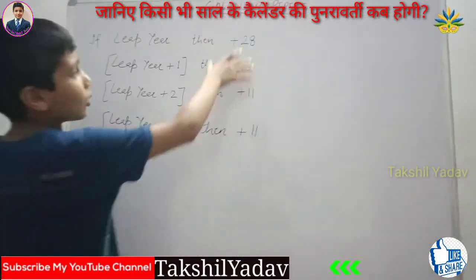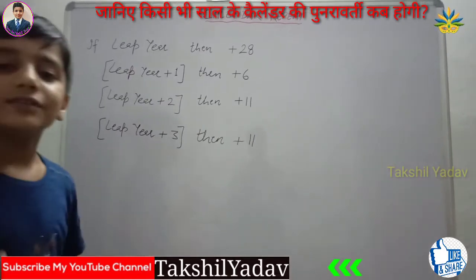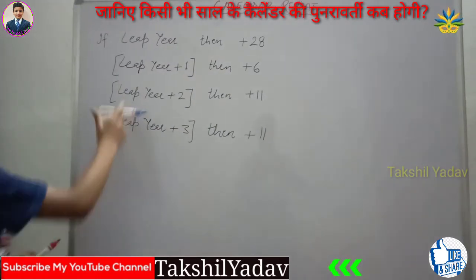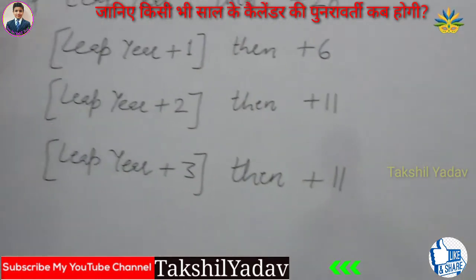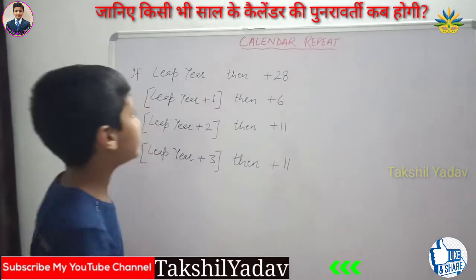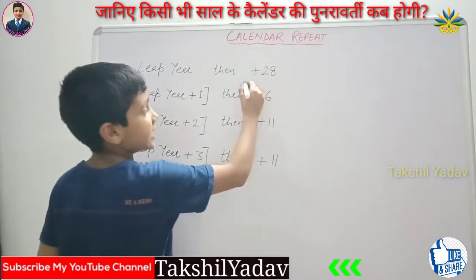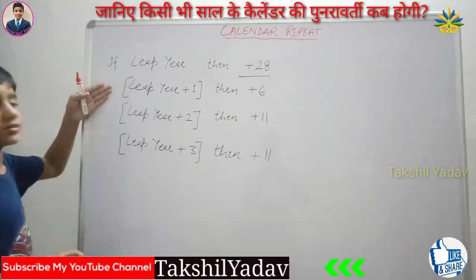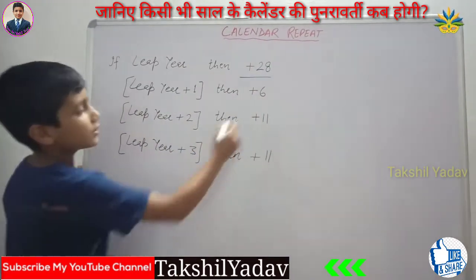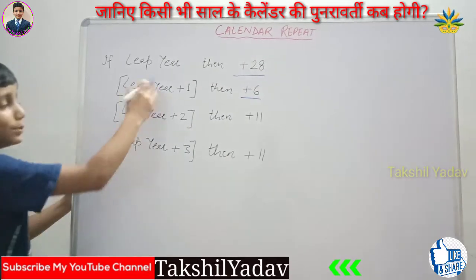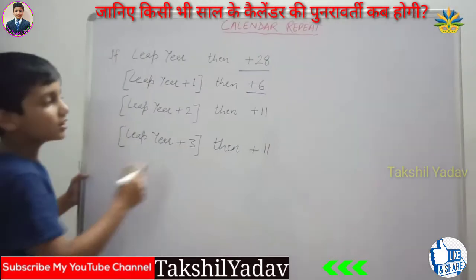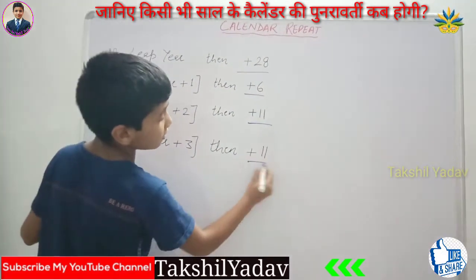As you can see, the topic is calendar repetition — that is, when will the calendar of a year repeat. If it asks when will a leap year's calendar repeat, then add 28 to that year. If it is leap year plus 1 (the post-leap year), then add 6. If it is leap year plus 2 or leap year plus 3, then add 11 in both cases.